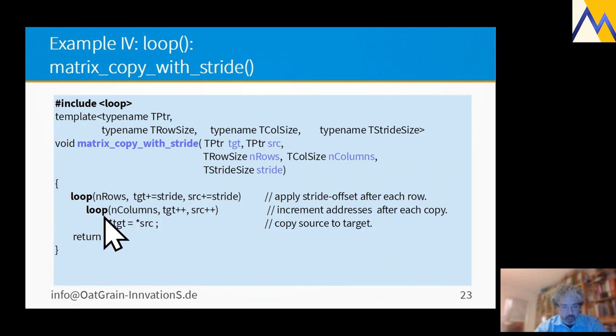For example, if you want to take this block statement copying source to target, looping it at N columns type and looping each row. And after each column, you increase the target pointer and the source pointer. And then for each row you apply the stride. This is an example how it works.